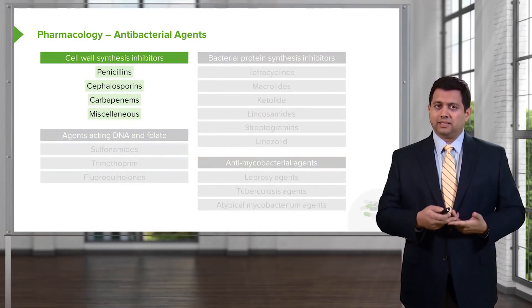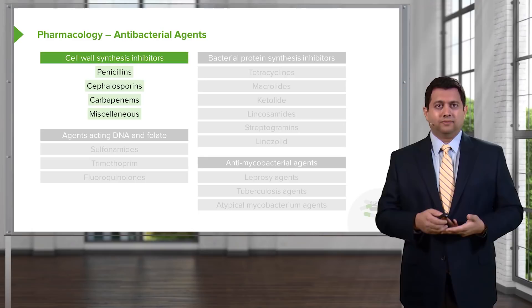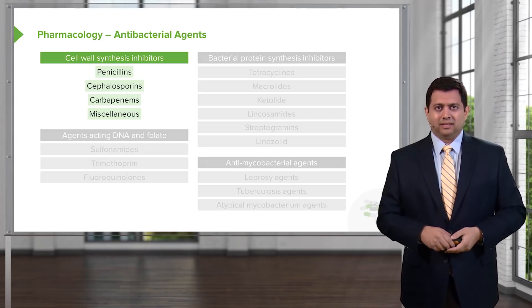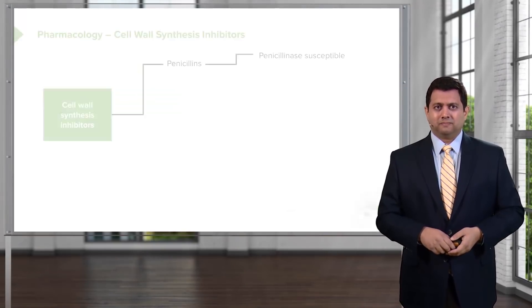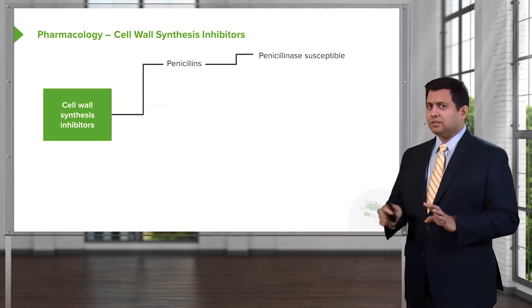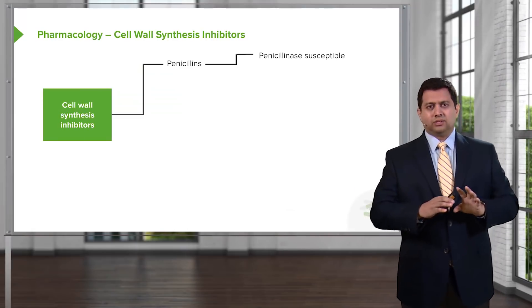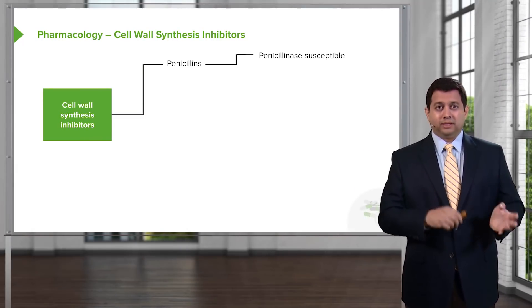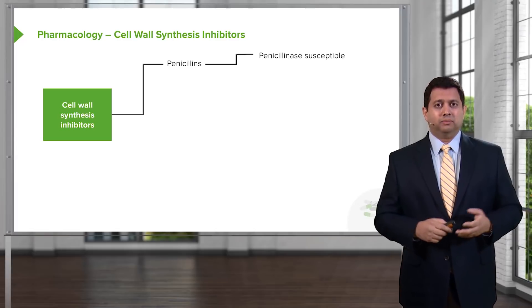Cell wall synthesis inhibitors include the penicillins, the cephalosporins, the carbapenems, and other miscellaneous drugs. When we take a look at these agents, there's quite a large variety within each subgroup.